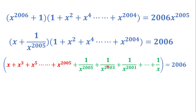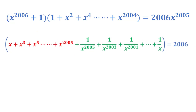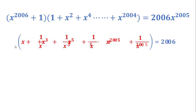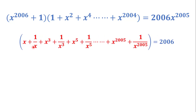As you can see, we have x and its reciprocal 1/x, x^3 and its reciprocal 1/x^3, all the way up to x^2005 and its reciprocal 1/x^2005. We want to rewrite these terms as (x + 1/x) + (x^3 + 1/x^3) + ... + (x^2005 + 1/x^2005).